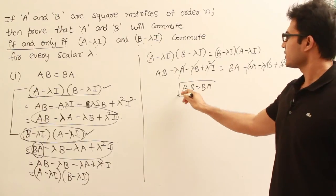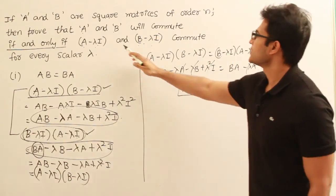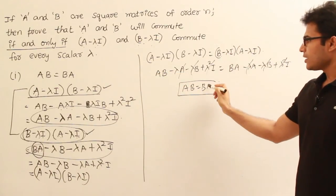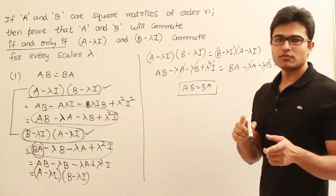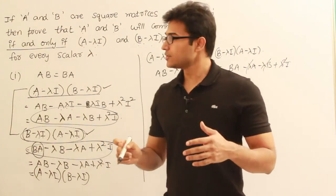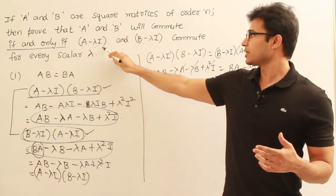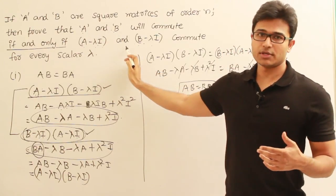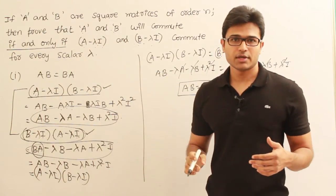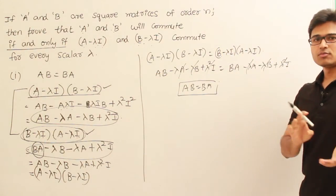If we cancel out everything that is common — the lambda A, lambda B, and lambda squared I terms — we are left with AB equal to BA. Therefore if A minus lambda I and B minus lambda I are commuting, then matrices A and B are commuting. We have proven both directions: first that AB equals BA implies the shifted matrices commute, and second that the shifted matrices commuting implies AB equals BA.